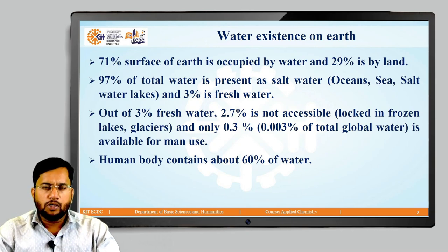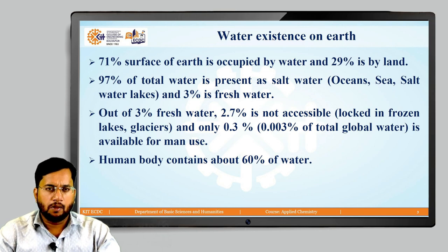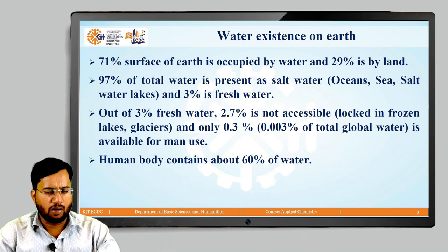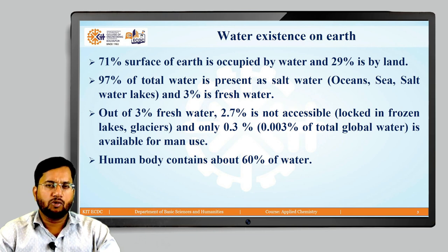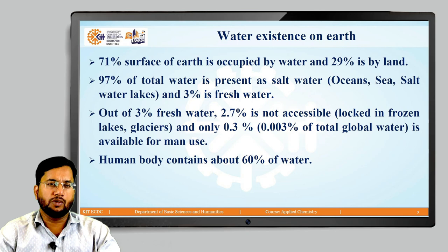We know that 71% of earth's surface is occupied by water and 29% is occupied by land. Out of the total global waters, 97% of water is present as salt water, that is in the form of oceans, sea, and salt water lakes, and 3% of water is fresh water. However, out of this 3% fresh water, 2.7% is not accessible as it is locked in frozen lakes and glaciers, and only 0.3% — that is 0.003% of total global water — is available for mankind.